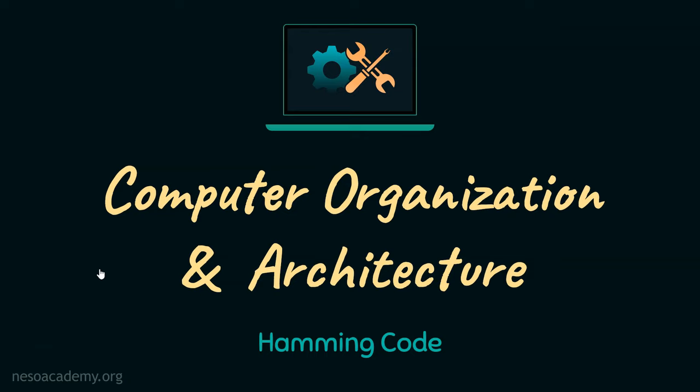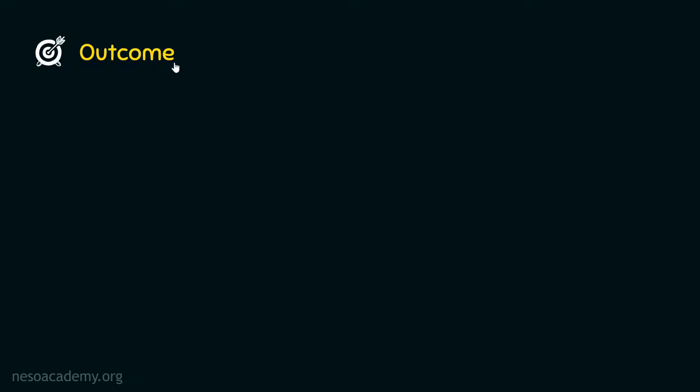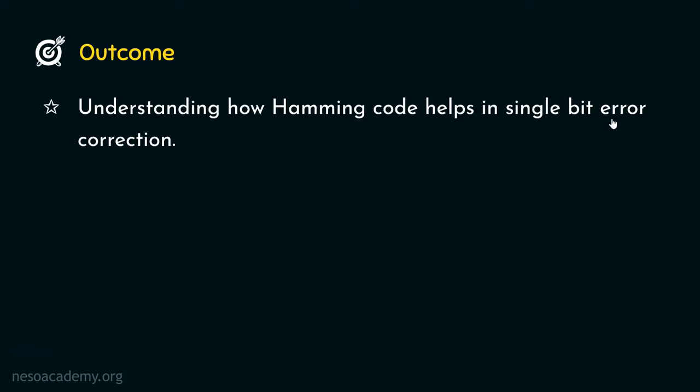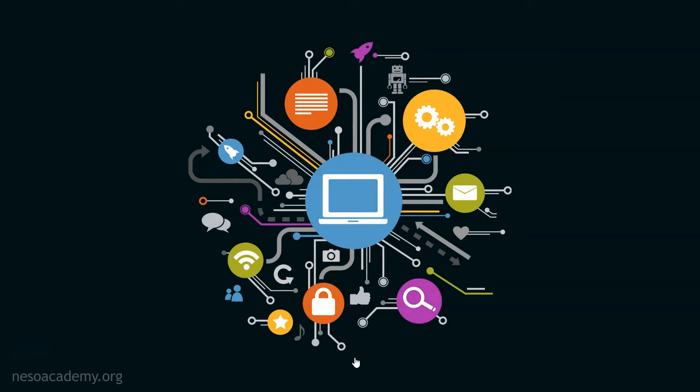Hello everyone and welcome back. In the previous session we observed that simple binary codes are not capable enough in facilitating error detection or error correction abilities. So in this session we are going to learn about Hamming code. Today we will acquire the understanding of how Hamming code helps in single bit error correction. In computer organizations, single bit errors are the most frequently occurring errors, and in order to correct those, we need one bit error correction codes.